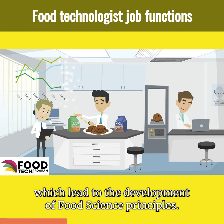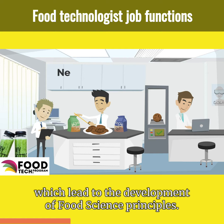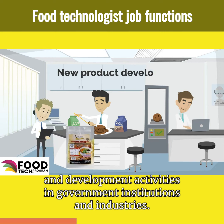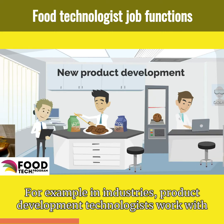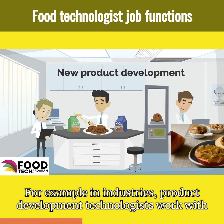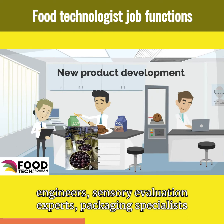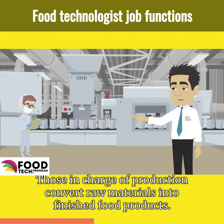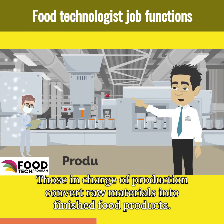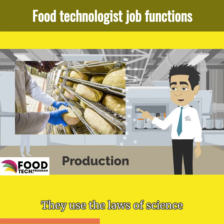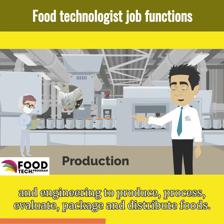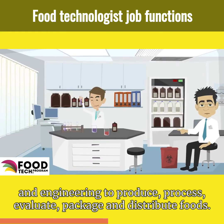As food scientists, we are skilled at making observations which lead to the development of food science principles. These principles are useful in research and development activities in government institutions and industries. For example, in industries, product development technologists work with engineers, sensory evaluation experts, packaging specialists, and marketing professionals to design and develop new food products. Those in charge of production convert raw materials into finished food products.